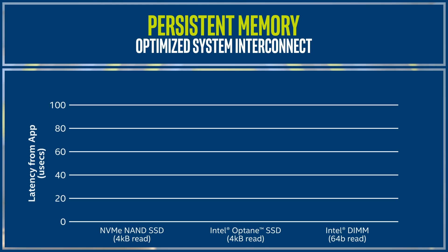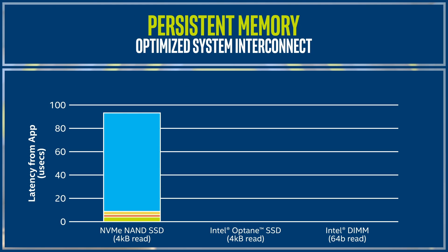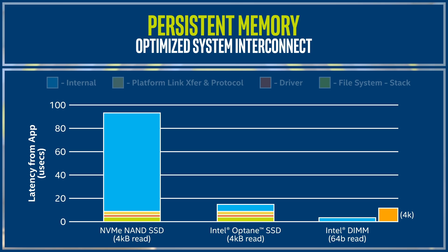Optane technology reduces access latency substantially — so much so that software, which usually contributes a very small proportion relative to the overall access latency for NVMe SSDs, starts to be the major bottleneck in the case of Optane SSDs. Persistent memory connects directly to the memory bus of the CPU, effectively eliminating any software bottleneck. You can see how low the latency is for a cache line read of 64 bytes. For a fair comparison, the latency for a block read of 4 kilobytes is also shown.